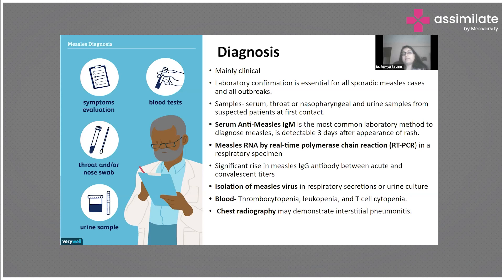Whenever we are in a place where there is an endemic or epidemic happening of measles, whenever the patient comes to us with these symptoms at the first point of contact, we have to collect three samples: the serum sample, throat or nasopharyngeal sample, and the urine sample. It is always good to collect these samples because they can help us in diagnosing or identifying measles.